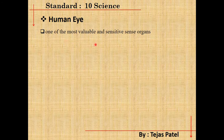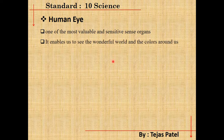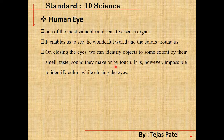Before that, let's discuss some basic introduction about the human eye. It is one of the most valuable and sensitive sense organs. With the help of the human eye we can see the wonderful world and the colours around us. When the eye is closed we cannot identify objects, but without eyes we can only identify objects with the help of smell, taste, sound, or touch — showing how important the eye is.